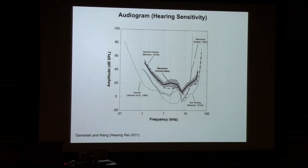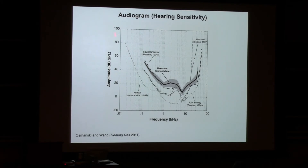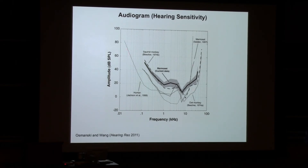For humans, this is our threshold of hearing — the audiogram. What I showed in previous slides is the receptive field of a single neuron, but many neurons together give rise to the audiogram. Our hearing threshold is very low around one to four kilohertz — where speech is located — meaning we can hear very sensitively there. As you move to lower or higher frequencies, the threshold increases.